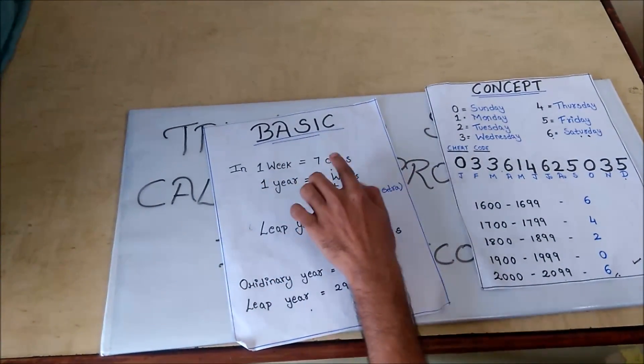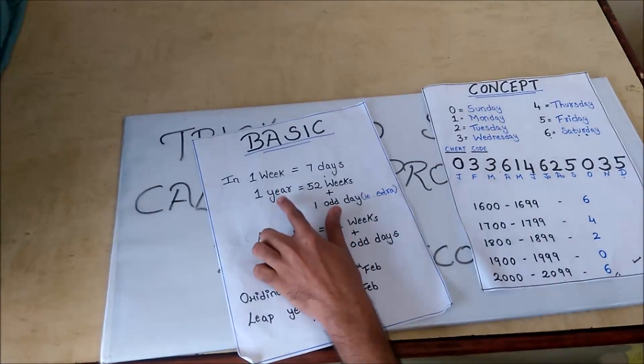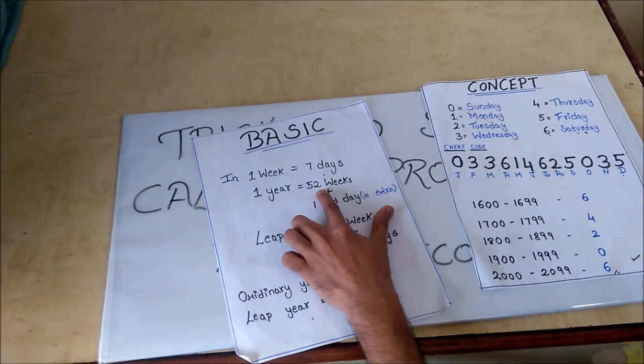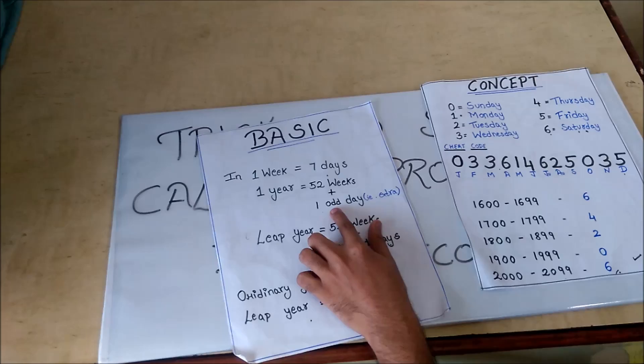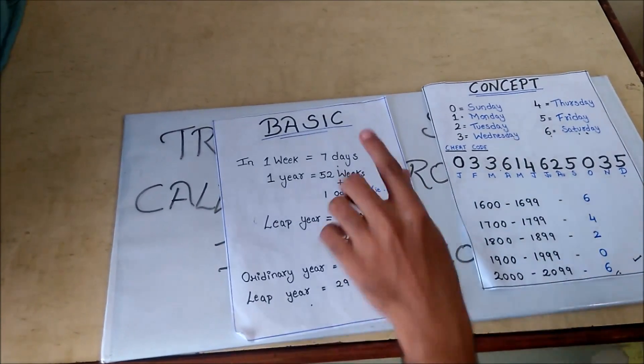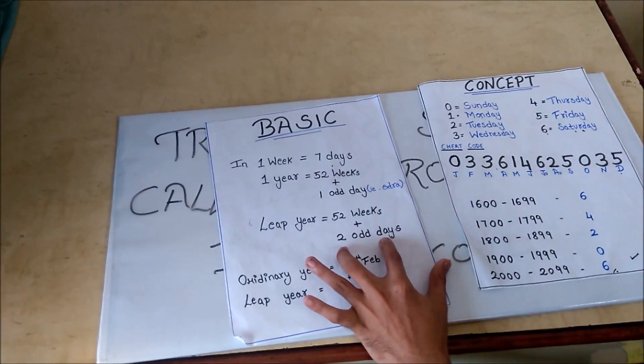As you know, in one week we have 7 days. In one year, we have 52 weeks plus an odd day. Odd day is an extra day. In a leap year, we have 52 weeks plus 2 odd days.